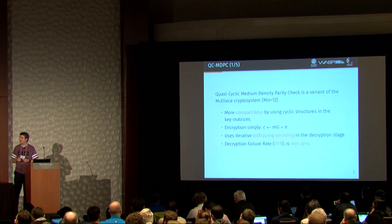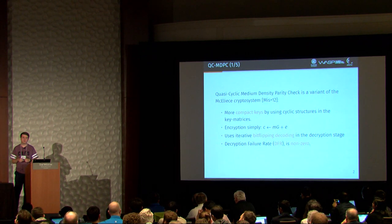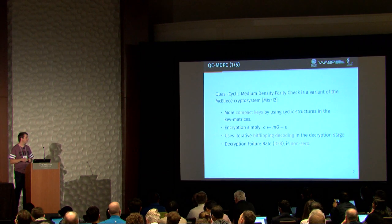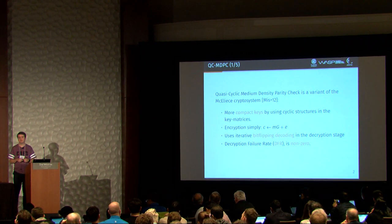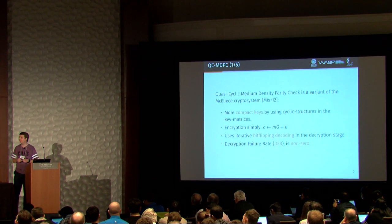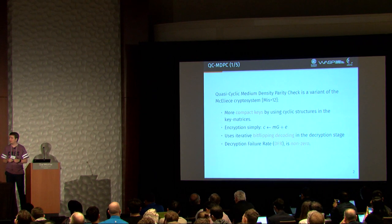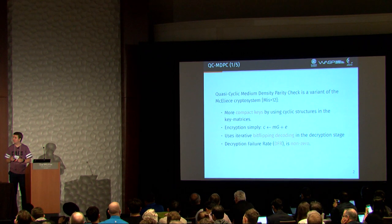The decryption is very efficient because we use a bitflipping decoding, which is iterative. Unfortunately, this gives us a decryption failure rate, which is non-zero. And we use this in order to perform an attack, which I will describe in a few moments.